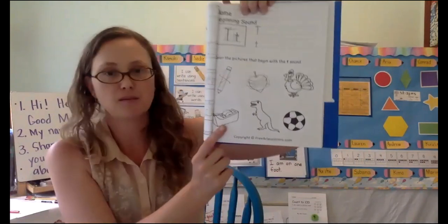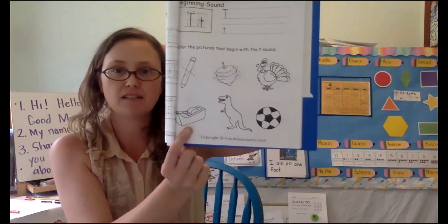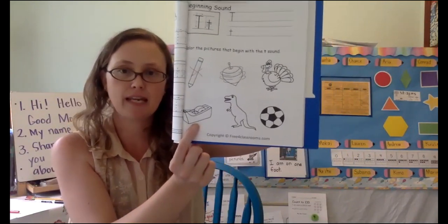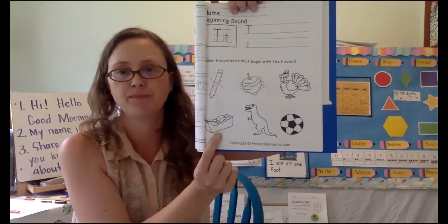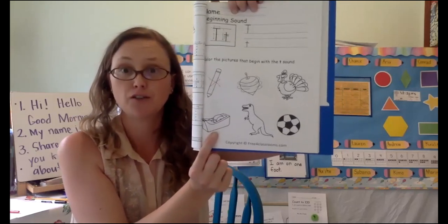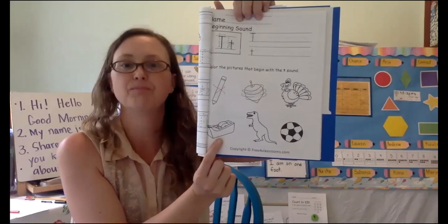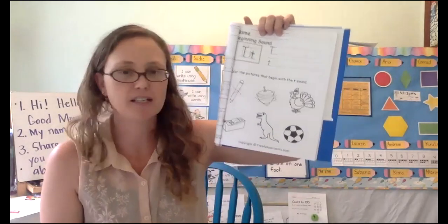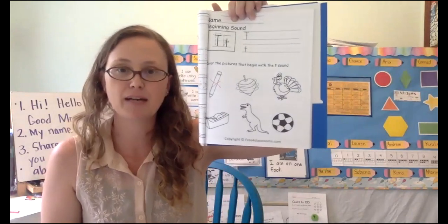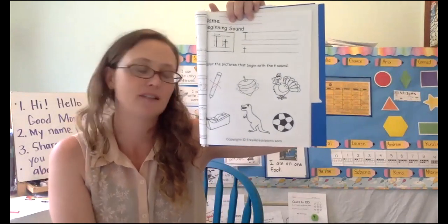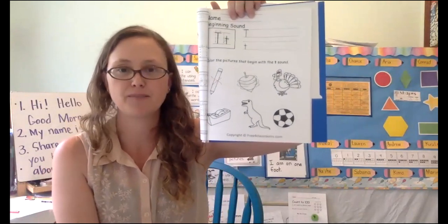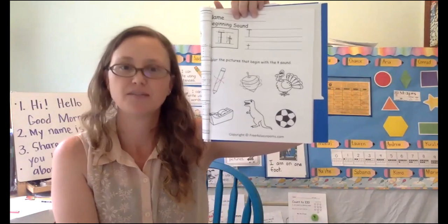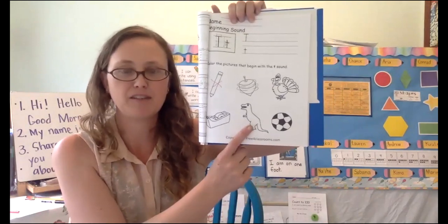The next one, this one's sticky and it can help you fix things. It's called tape. What's the first sound in tape? T, t. So do we color it? So let's leave it. Next one's a dinosaur. But it's a special kind of dinosaur. It's called a T-rex or Tyrannosaurus Rex. What's the first sound? T. So we're going to leave it.